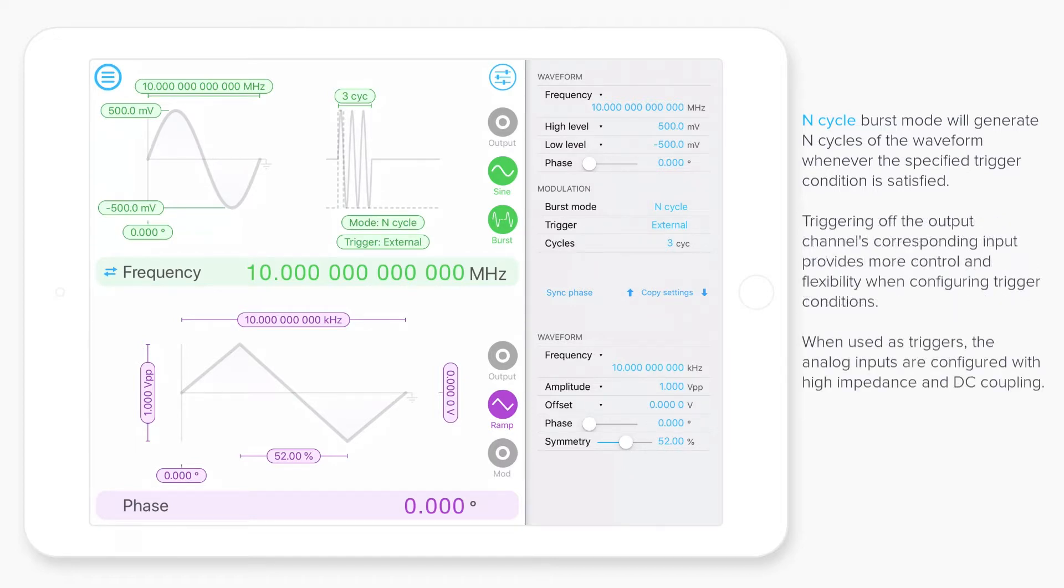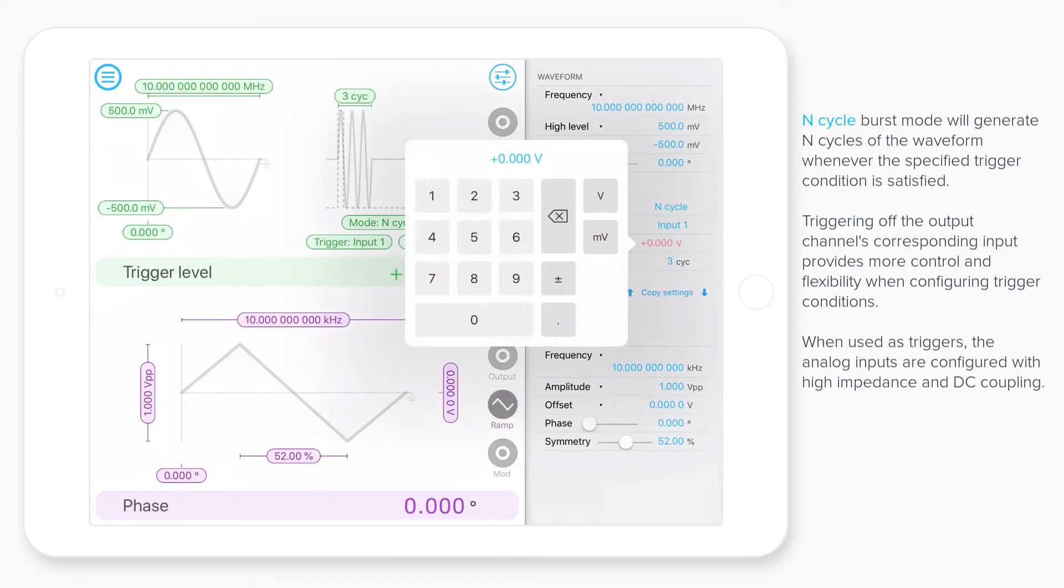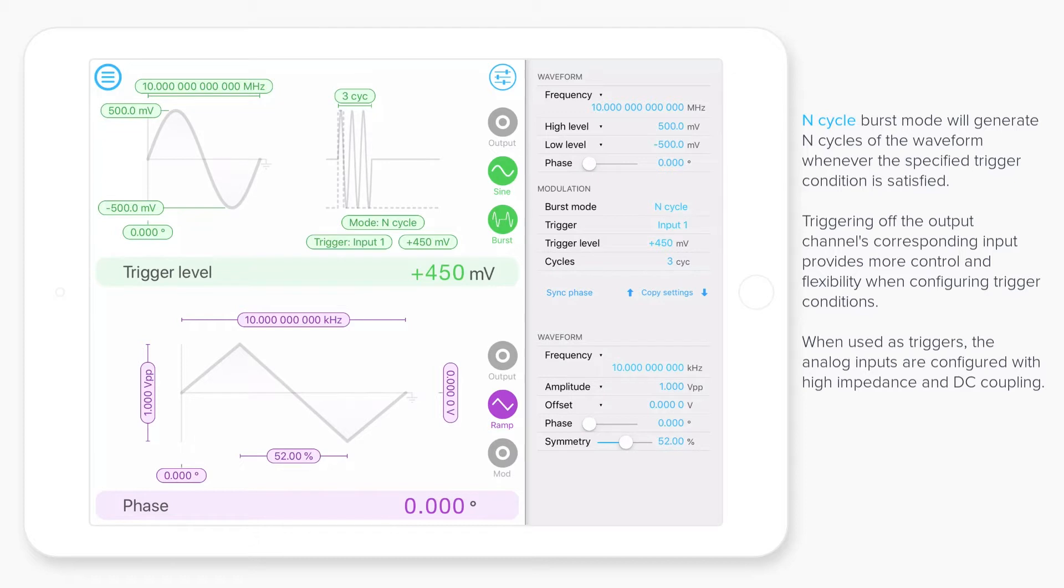We can also use the analog input to trigger this. And this is really great because it allows us to set the trigger threshold with very fine precision. So in this particular case here, if an input signal comes in that exceeds 450 millivolts, it will produce three cycles of the sine wave at 10 megahertz. And then it will stop and then wait for the next trigger event.